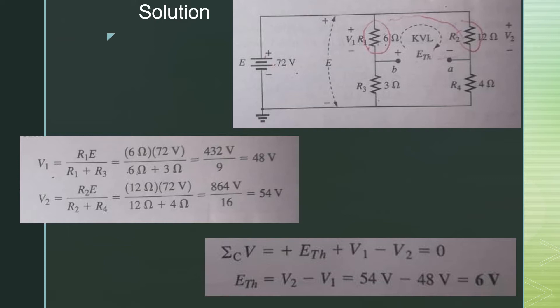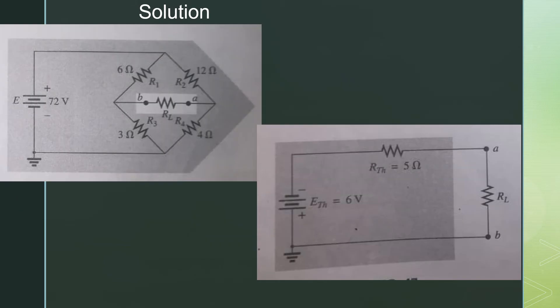Now we have R Thevenin and E Thevenin, so we can redraw our Thevenin equivalent circuit. We have the Thevenin equivalent circuit for this shaded region, which contains only a voltage source and a series resistor. Replace the load resistor to its original position between points A and B. That is the equivalent circuit for that shaded region.